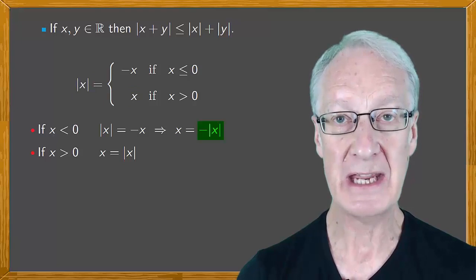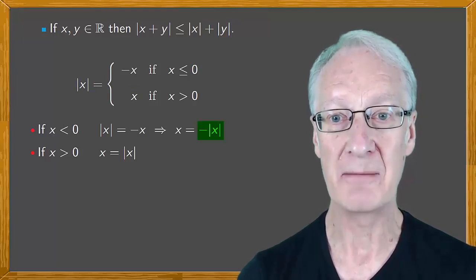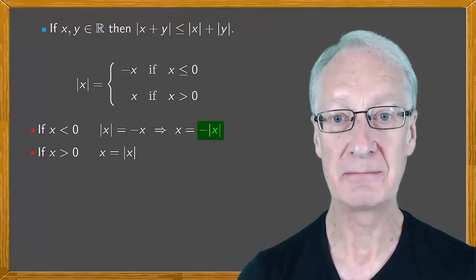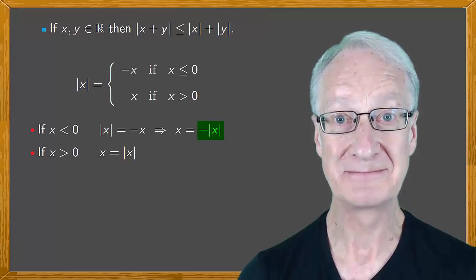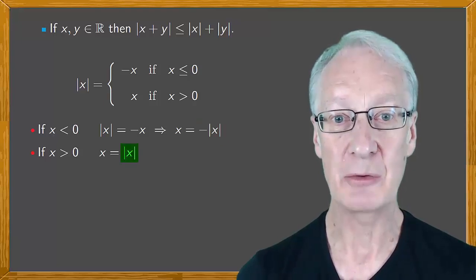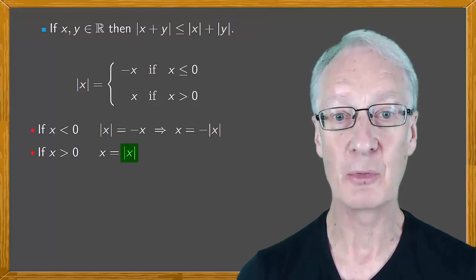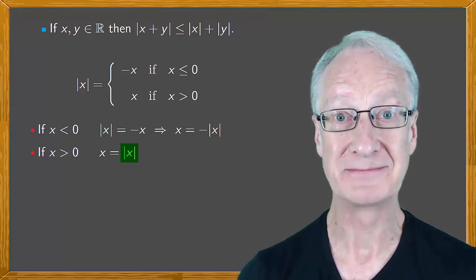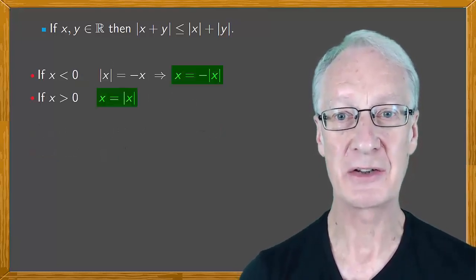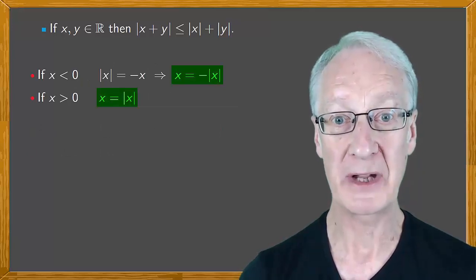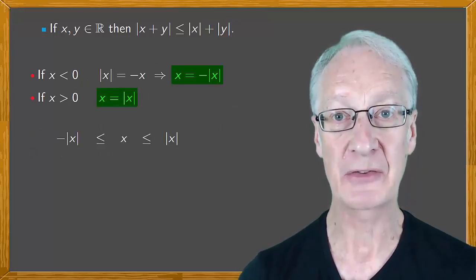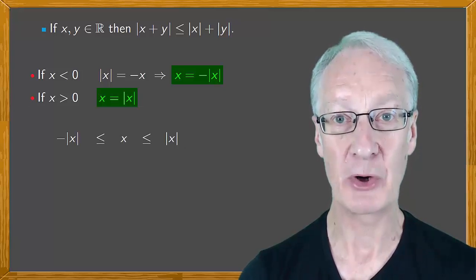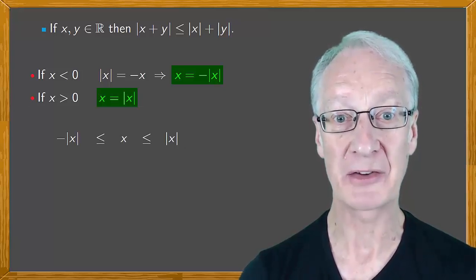Notice that here we have minus a positive number, which is a negative number. And here we have an absolute value, which is a positive number. In general, then, x can take two values, minus mod x or mod x, so that x is between minus mod x and mod x.